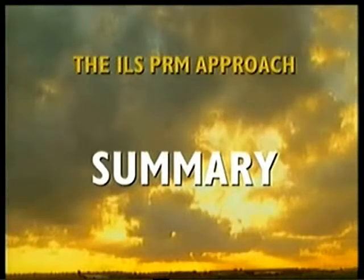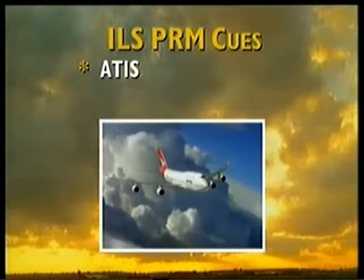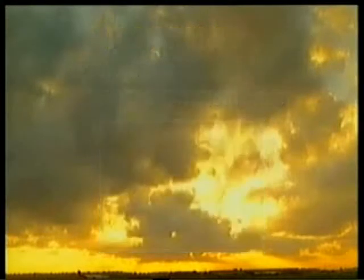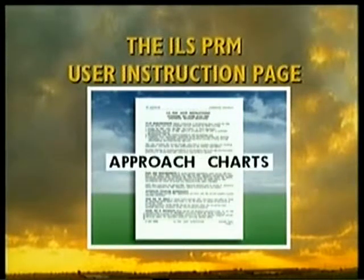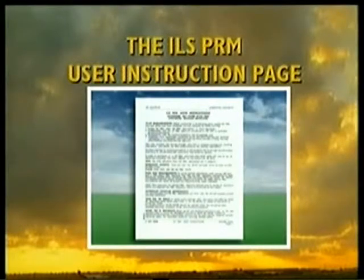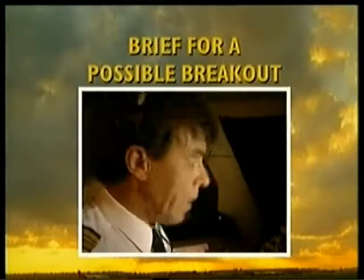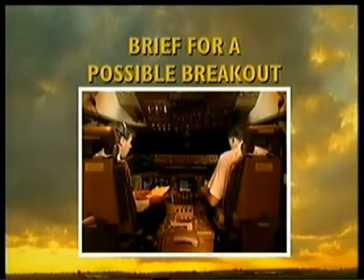Let's summarise the pertinent differences between a normal ILS approach and an ILS PRM approach. The ATIS will contain the words 'ILS PRM approach' as a cue that ILS PRM approaches are in progress. Additionally, you may hear the preceding aircraft being cleared for an ILS PRM approach. You will have a separate approach plate. You are required to read the ILS PRM user instruction page before carrying out an approach. It will remind you to set up two COM frequencies and when to monitor the PRM frequency. In addition to the usual items briefed for the ILS approach, include details of the possible breakout manoeuvres, which in some cases may be very different from most learned behaviours.